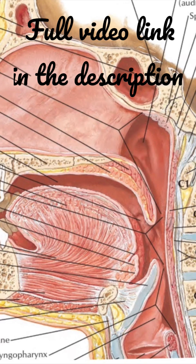This is the upper border. The upper border is attached to the posterior margin of the hard palate, and the lateral borders become continuous with the wall of the pharynx.